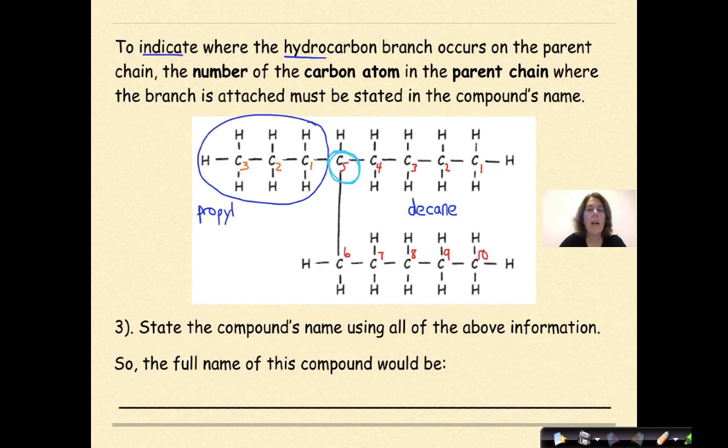To indicate where the hydrocarbon chain branch occurs on the parent chain, the number of the carbon atom in the parent chain where the branch is attached must be stated in the compound's name. State the compound's name using all of the above information. So the full compound name would be 5-propyl-decane, because the 5 tells me where that branching chain is coming off the parent chain. The propyl is telling me that it's a branch that involves three carbons, and then the decane tells me how many carbons are in the parent chain, along with that it is a saturated hydrocarbon.